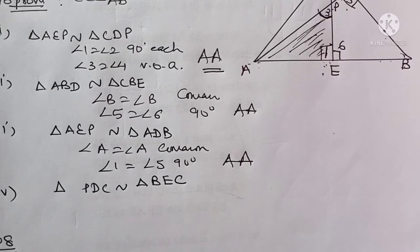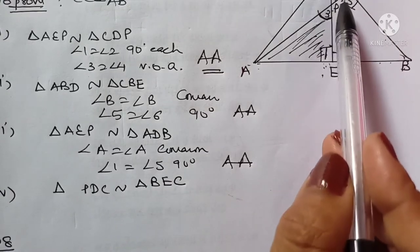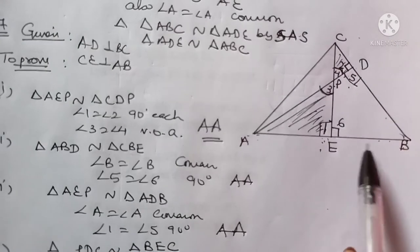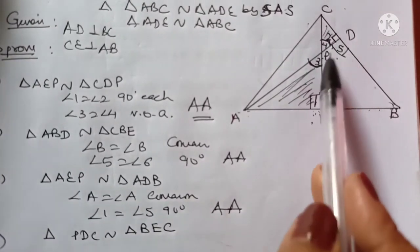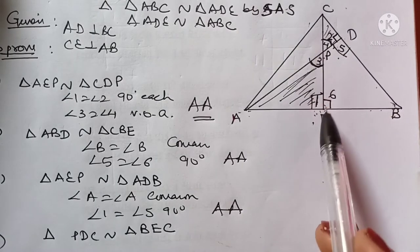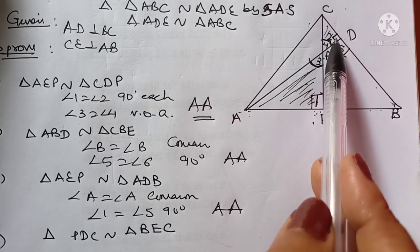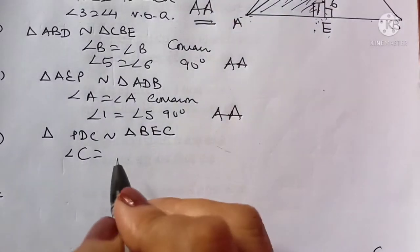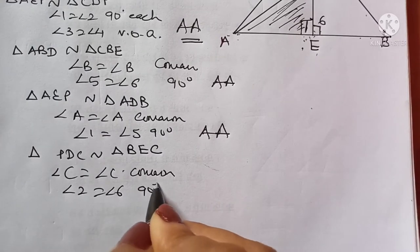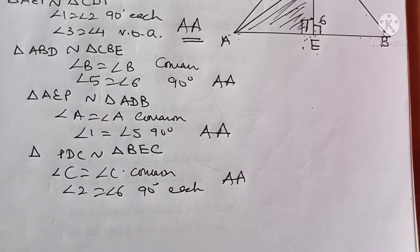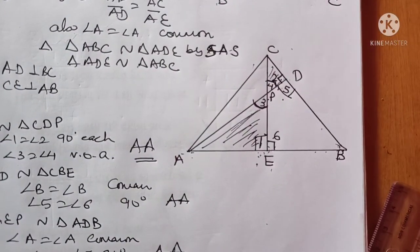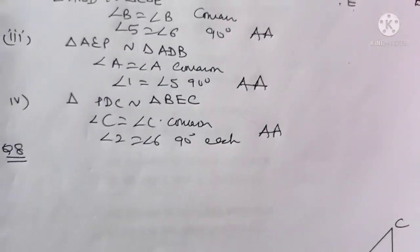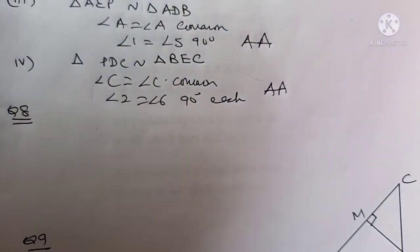The last part of Question 7 is triangle PDC similar to triangle BEC. Angle C is common to both triangles. In triangle PDC, angle D — which we named angle 2 — is 90°, and in triangle BEC, angle 6 is 90°. So angle 2 is equal to angle 6, both 90°. Again by AA rule, triangles are similar. In all parts, AA rule applies with one common angle and one angle equal to 90° each — making AA the easiest rule to use.